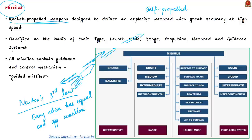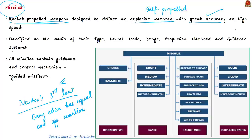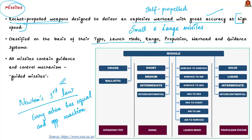Missiles are designed to deliver an explosive warhead with great accuracy at high speed — that is why they are strategically important for the defense of a country. Missiles vary from small tactical weapons with short ranges to much larger strategic weapons with ranges extending to several thousand miles. Classifications of missiles are based on type, launch mode, range, propulsion, warhead, and guidance system. All missiles contain some form of guidance and control mechanism, so they are generally referred to as guided missiles.